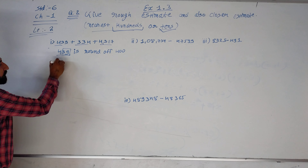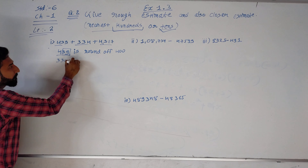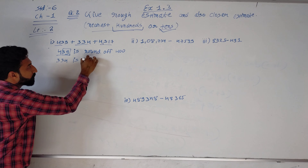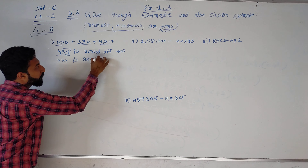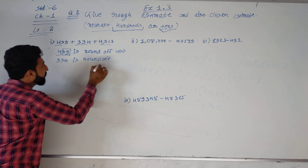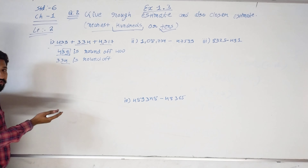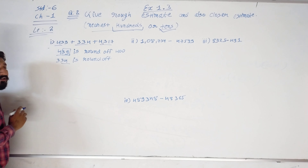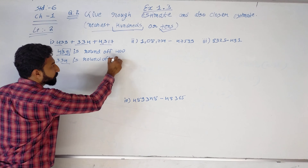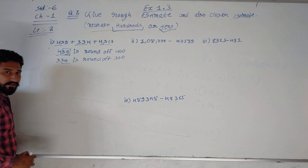Second: 334 is round of — you can easily see that 34 is nearest to 300. So we can write here 300.